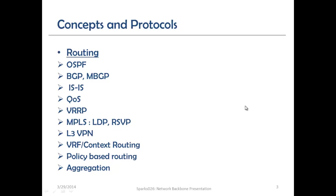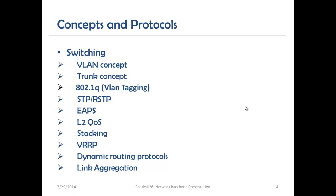Moving on to switching: we have the concept of VLAN, which separates traffic into different broadcast domains. We also have trunk concepts, used when connecting one switch to another. There is 802.1Q VLAN tagging, which allows you to carry multiple traffic types in one VLAN, differentiated by tags. Then we have STP and RSTP — the Spanning Tree Protocol and Rapid Spanning Tree Protocol, an evolved version of STP. We also have EAP, the Ethernet Automatic Protection switching, owned by Extreme Networks.